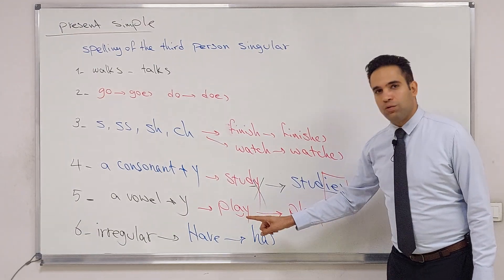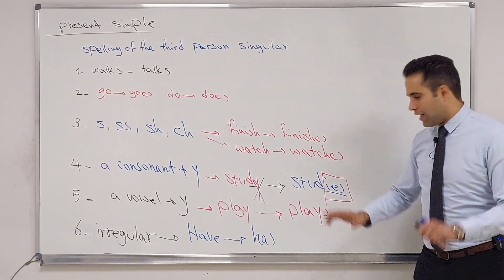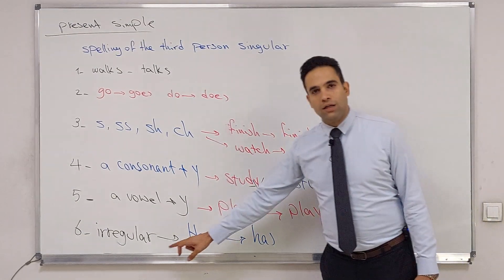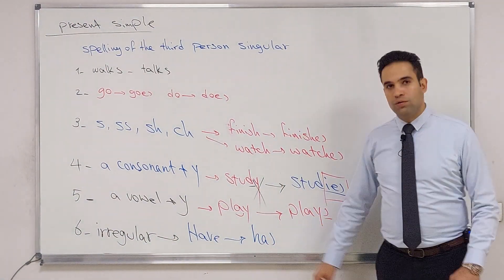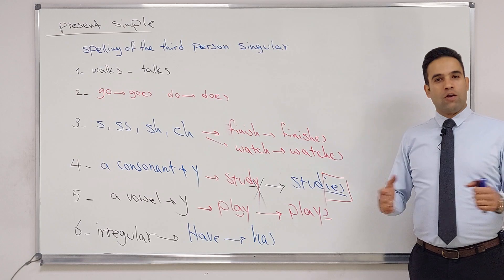Play - a vowel, a - so we don't change anything, plays. And finally, irregular verbs: have, we change it to has.